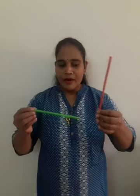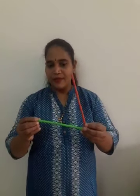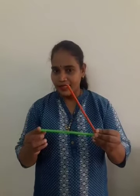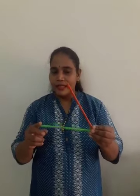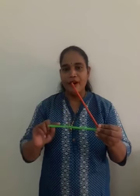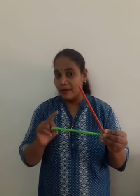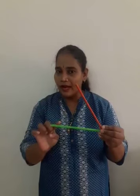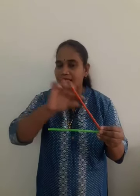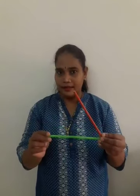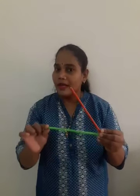Now, I have taken two sticks. If I join these two sticks, an angle is formed. An angle is made up of minimum two rays or segments. These are called the rays or arms of an angle. An angle has two arms.